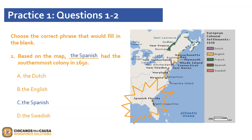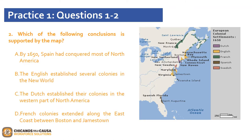Let's move on to question 2. Question 2 asks: which of the following conclusions is supported by the map? A, by 1650, Spain had conquered most of North America. B, the English established several colonies in the New World. C, the Dutch established their colonies in the western part of North America. D, French colonies extended along the east coast between Boston and Jamestown. If you selected B, the English established several colonies in the New World, you are correct. This is verified by noting that the English had more colonies than any other country. The Spanish had only conquered the southern part, the Dutch established colonies on the east coast, and French colonies bordered the northern part of North America.